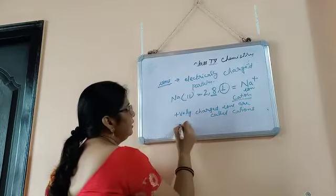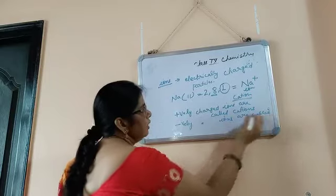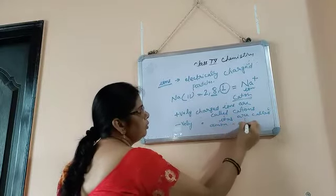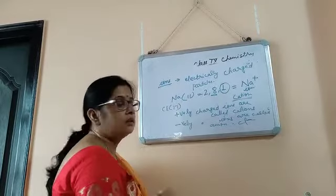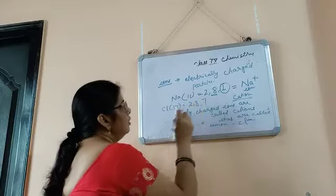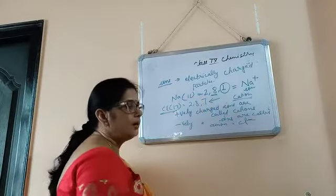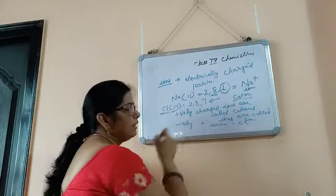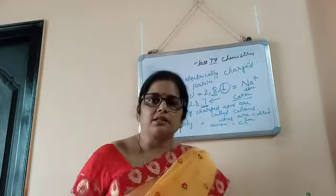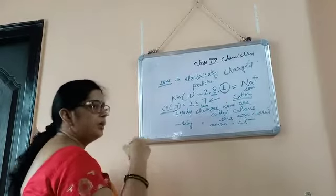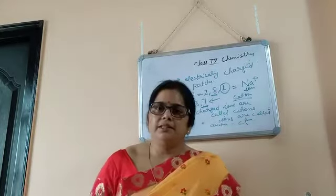Negatively charged ions are called anions. For example, chlorine has atomic number 17, with configuration 2, 8, 7. Chlorine will take one electron from the sodium atom, which sodium loses. When any element takes an electron, it becomes negatively charged — that's why chloride becomes negatively charged.